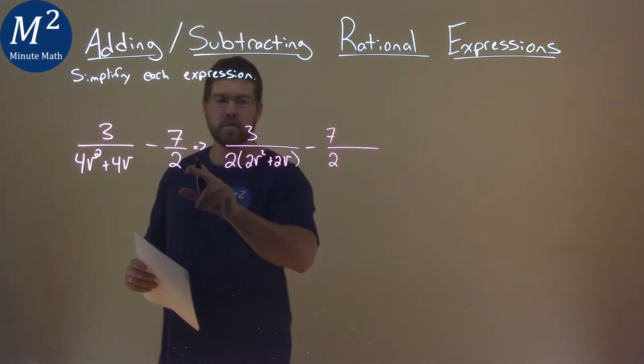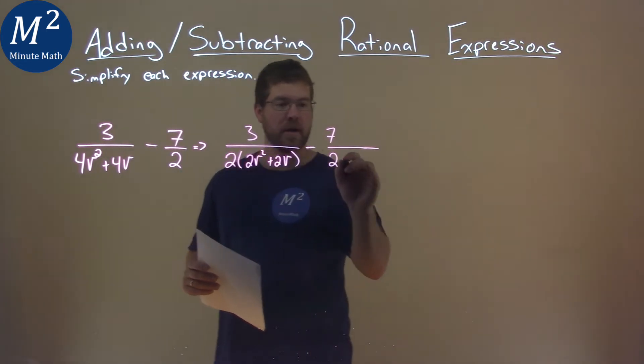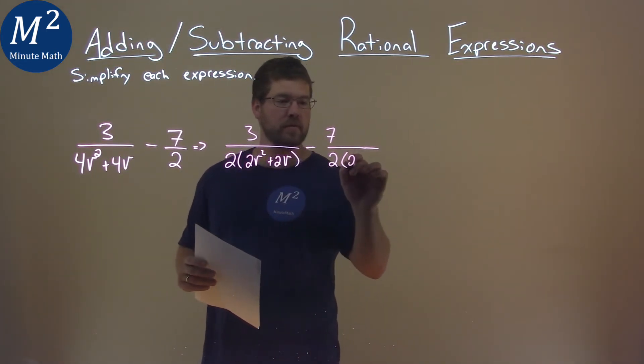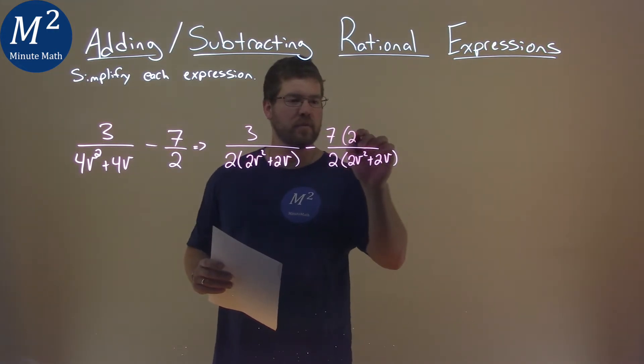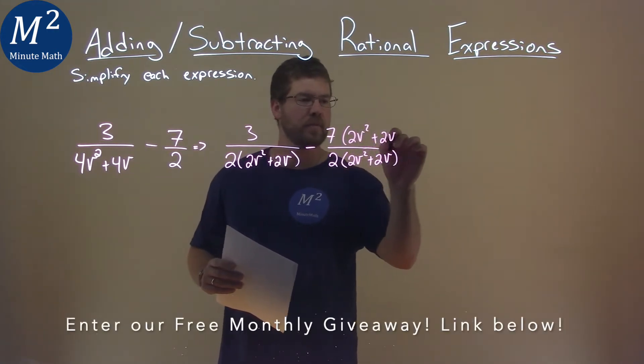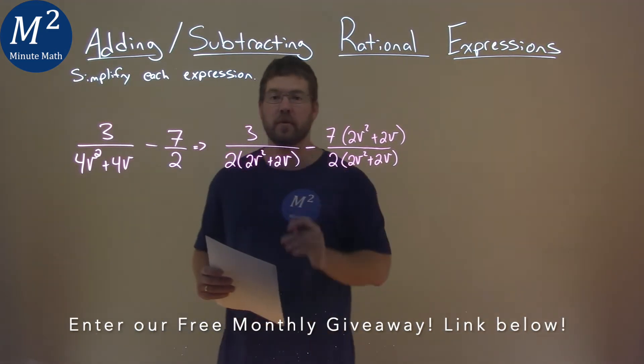So if I multiply this second fraction by what's left over here, 2v² plus 2v over itself, 2v² plus 2v, we now have the same denominator here for both parts.